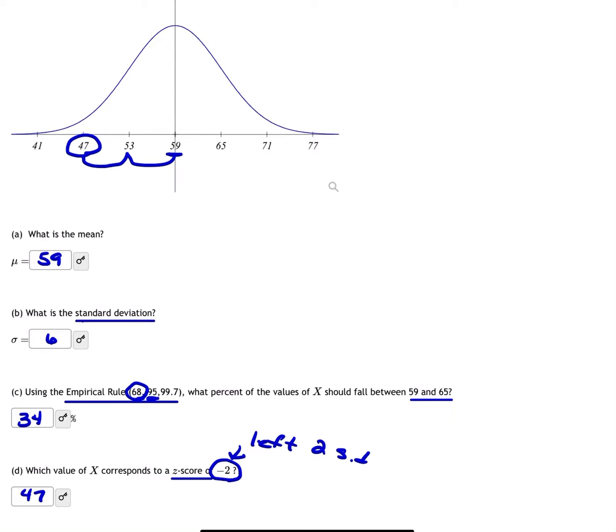The negative means you're going to the left, and then you just count how many standard deviations you are going in that direction.